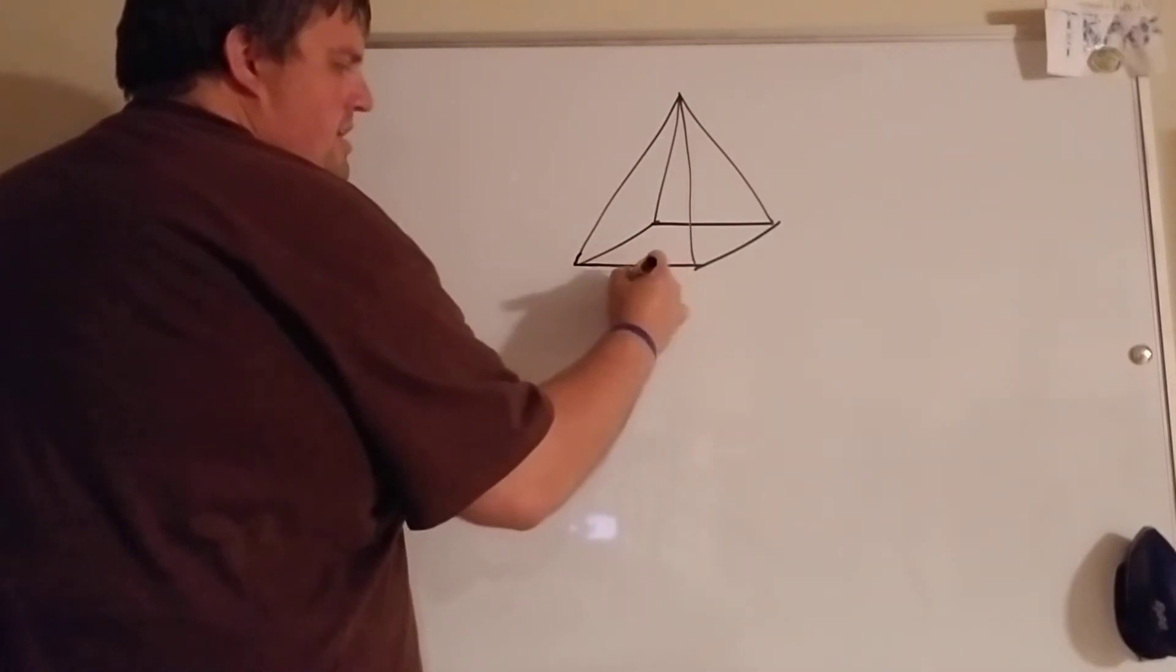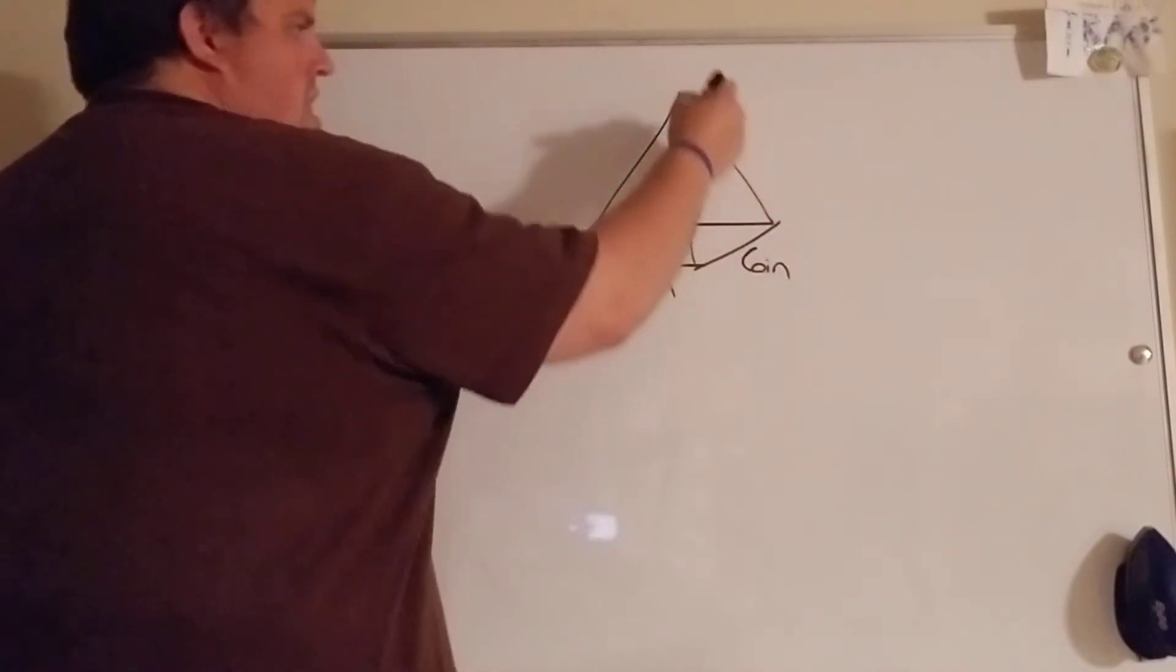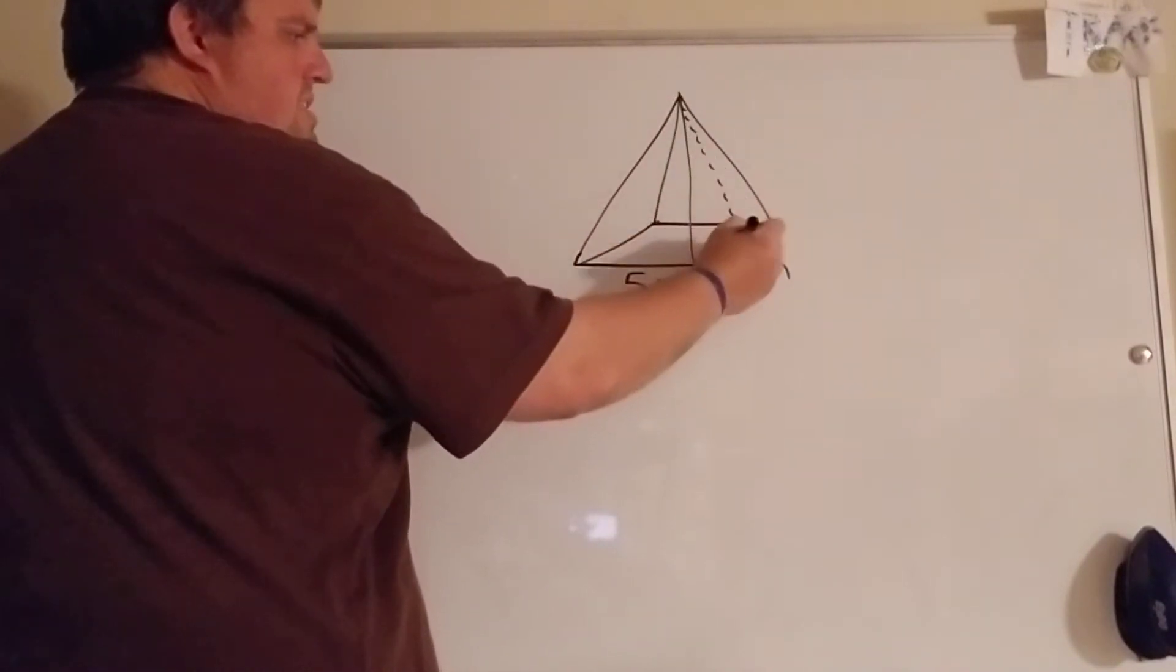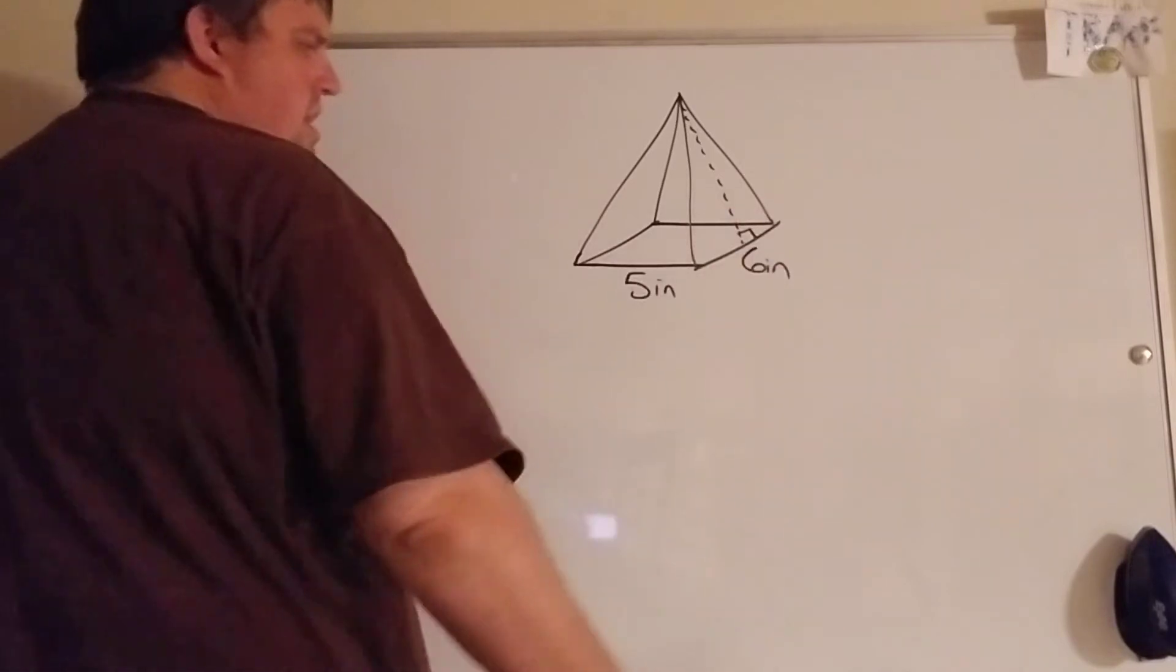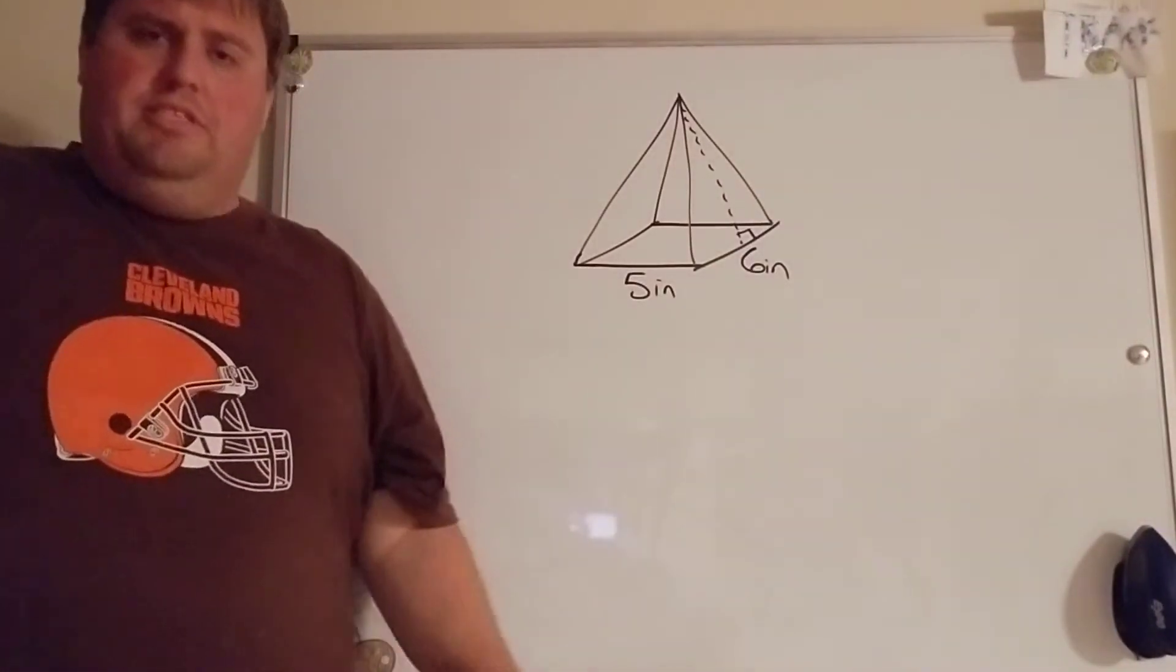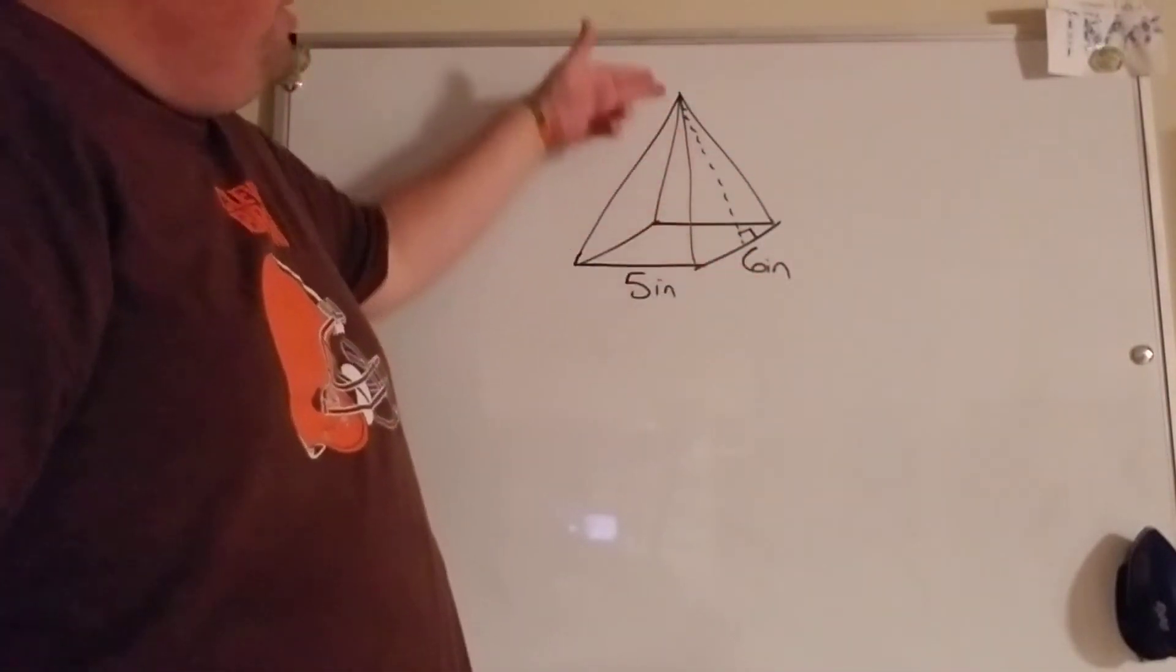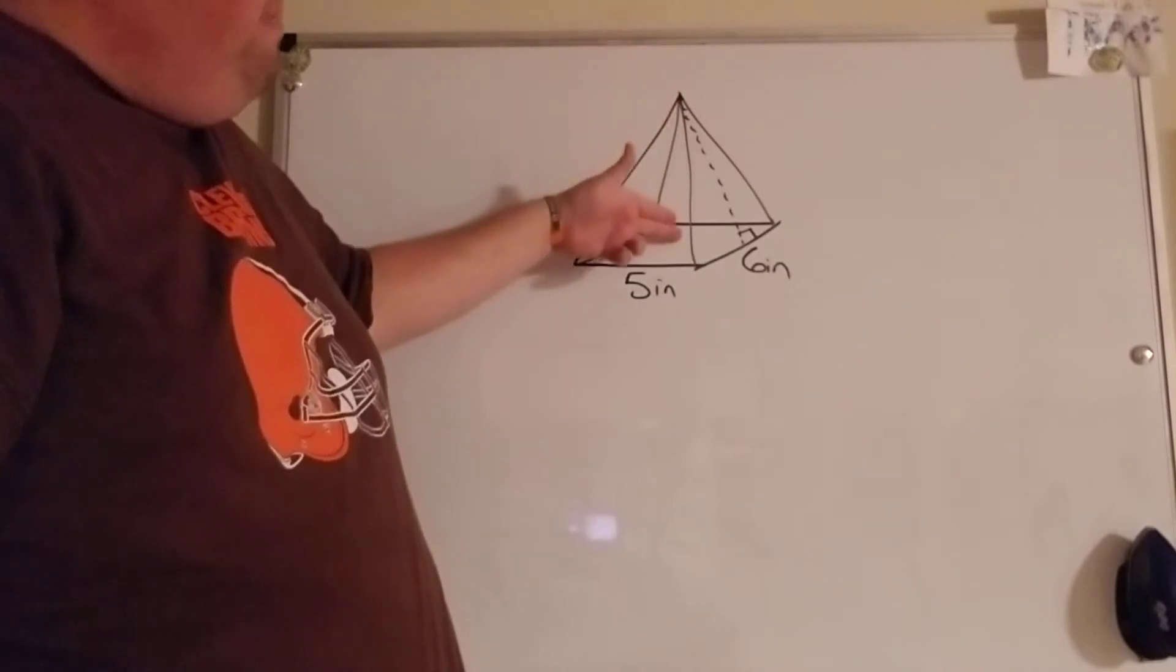A couple things to note to you guys. Let's say this is five inches, this is six inches, and they're gonna give you this distance this time and we call that a lateral height. It's literally the altitude but it's on the side of the triangle, so it's not the one that goes from the center to the base.